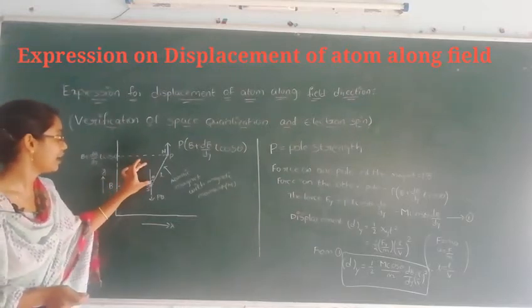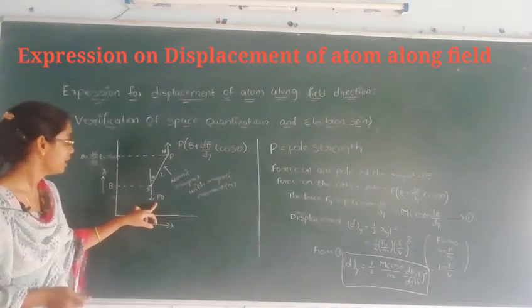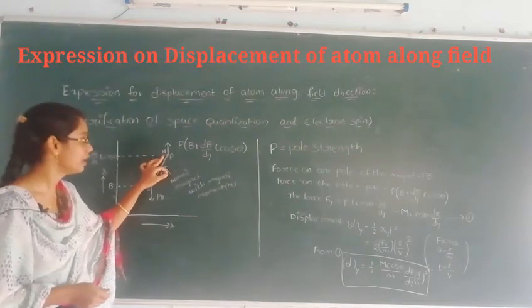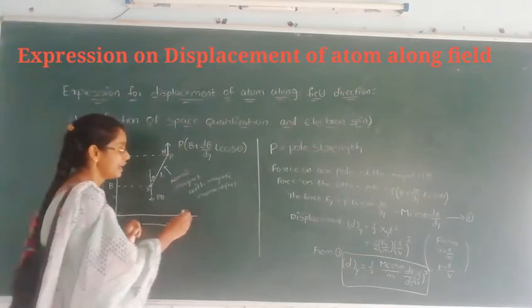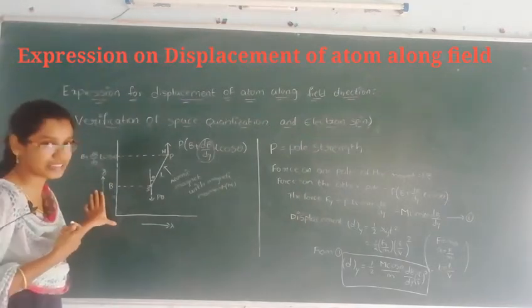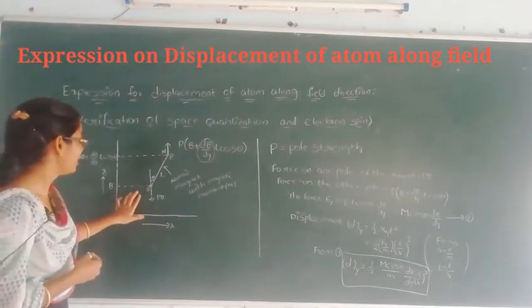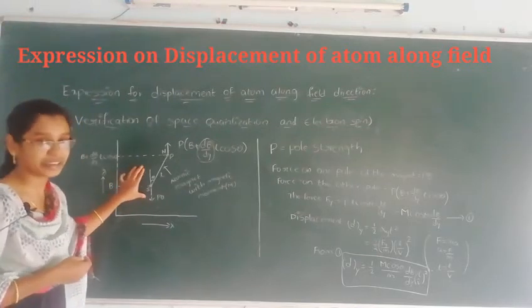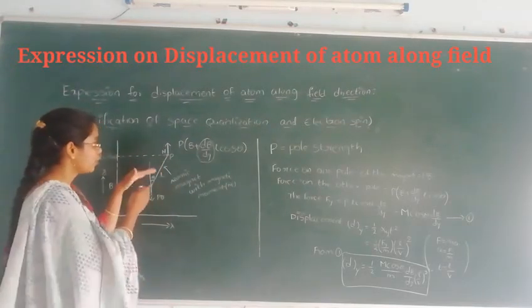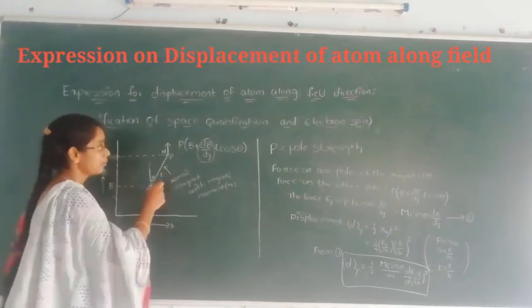Expression of displacement of an atom along field direction: Let us consider an atomic magnet which is placed in non-homogeneous, inhomogeneous field. Here, P is the pole strength, and B is the magnetic field. Inhomogeneous magnetic field means the magnetic field gradient is dB by dy. Let us draw a graph between the x-axis and y-axis. The inhomogeneous field is along the y direction. First of all, the atomic magnet is placed in a straight line like this. When it is placed in a homogeneous field, it automatically moves from the straight line with theta angle and length L.